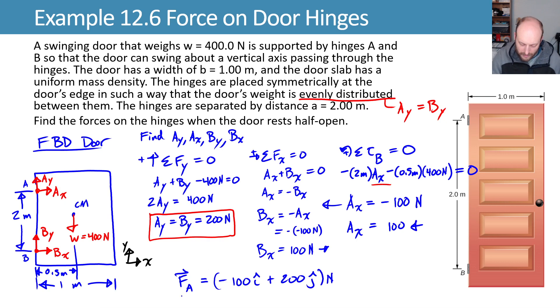And then my force at hinge B is going to be 100 in the i-hat plus 200 in the j-hat, again with units of newtons.